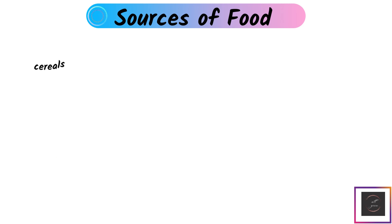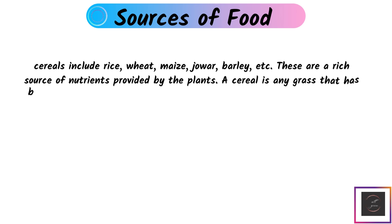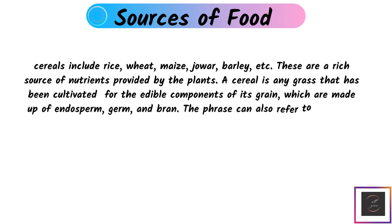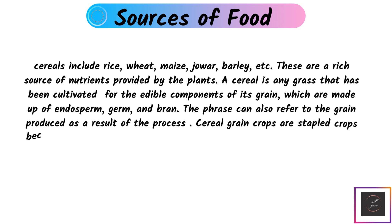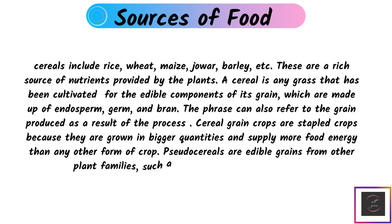Cereals: Cereals include rice, wheat, maize, barley, and others, and are resources of nutrients provided by plants. A cereal is any grass cultivated for the edible components of its grain, which are made up of endosperm, germ, and bran. Cereal grain crops are staple crops because they are grown in larger quantities and supply more food energy. Pseudo-cereals are edible grains from other plant families such as buckwheat, quinoa, and chia.